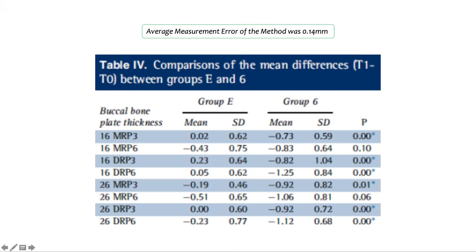After analyzing the images, we determined that the average error of the method was 0.14 mm. We then proceeded to analyze all the images, and as you can see in this table, the group that had the hyrax inserted on the permanent molars had way more bone changes compared to the group in the deciduous molars.